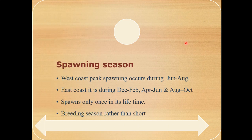About the spawning season — the breeding season: spawning generally occurs in June–August, and during December to February, April to June, and August to October on the East Coast. The oil sardine spawns only once in a lifetime, but the months may vary depending on surrounding conditions. The breeding season is relatively short.